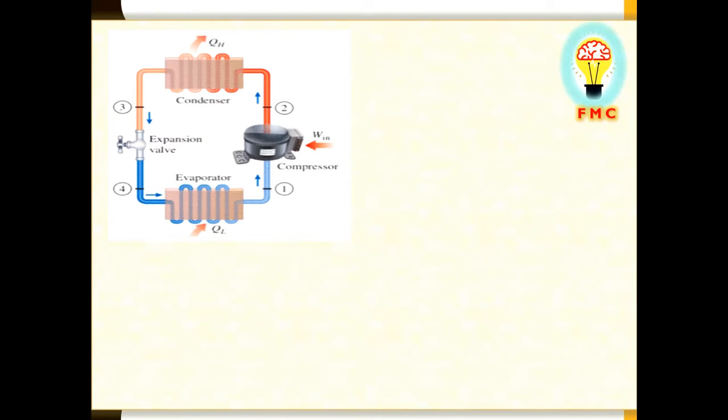This is vapor compression refrigeration cycle. Here you can identify that we have one compressor, then we have one condenser, expansion valve, and evaporator. These are all the four components which is used in vapor compression cycle.